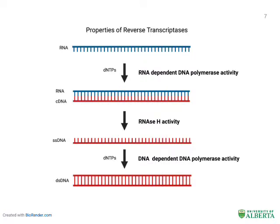In the transcription-mediated assay, the ribosomal RNA target is the template for a reverse transcriptase. Reverse transcriptases have multiple enzymatic properties. They are RNA-dependent DNA polymerases, which can create complementary DNA from an RNA template such as our ribosomal RNA. They also have endonuclease activity and can degrade the RNA strand of DNA-RNA hybrids, as well as DNA-dependent DNA polymerase activity, allowing conversion of single-stranded complementary DNA into double-stranded DNA.